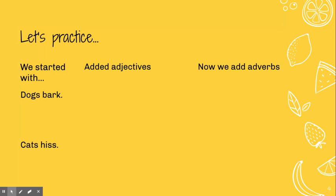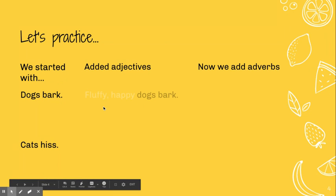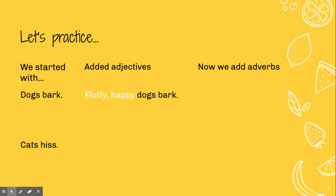Okay, so we started with 'dogs bark,' right. Yesterday we started with 'dogs bark' and then we added some adjectives — 'fluffy happy dogs bark.' Didn't you want to add some adverbs? I know I did. How was the dog barking? So now we're gonna do that: 'fluffy happy dogs bark loudly.'